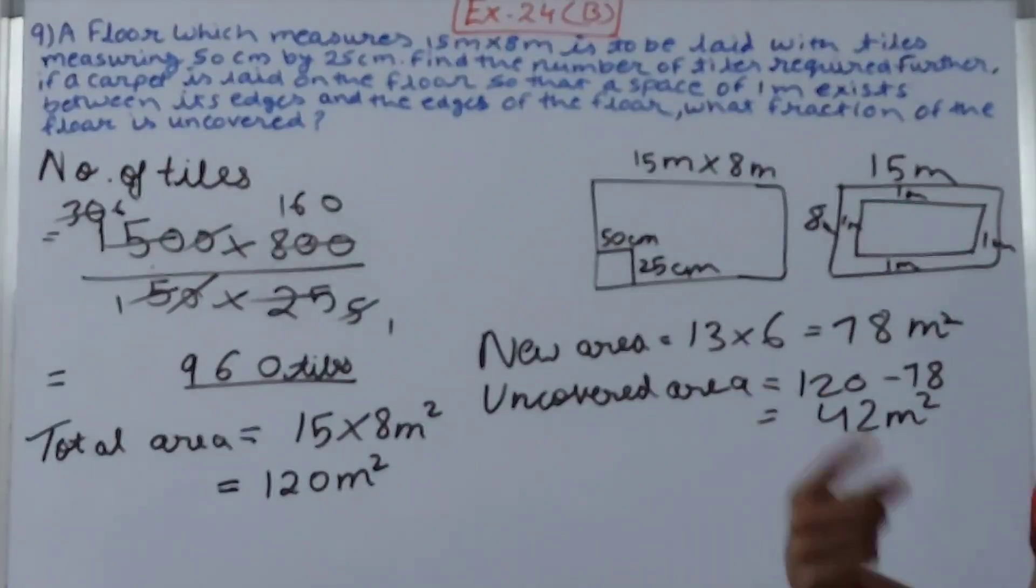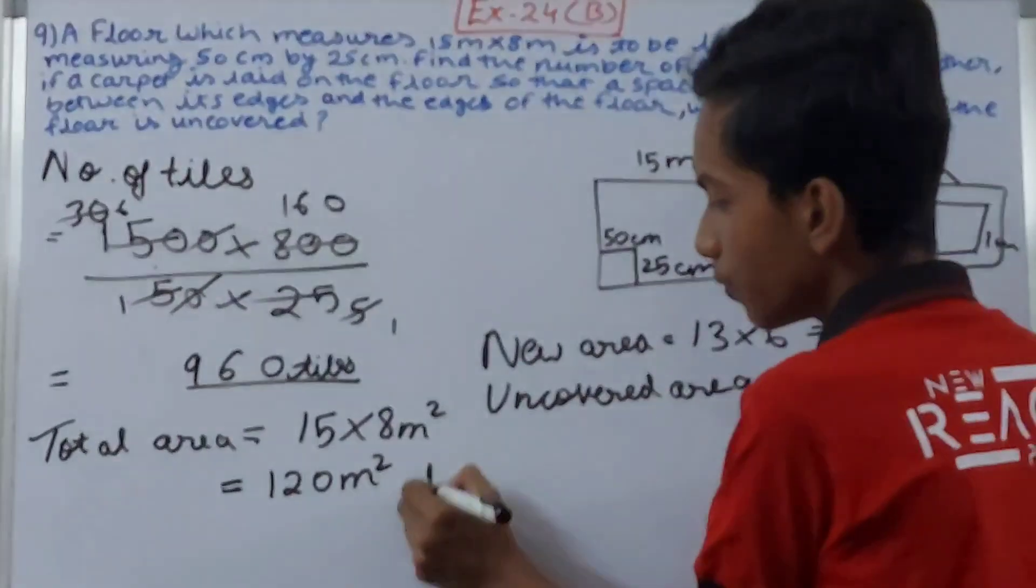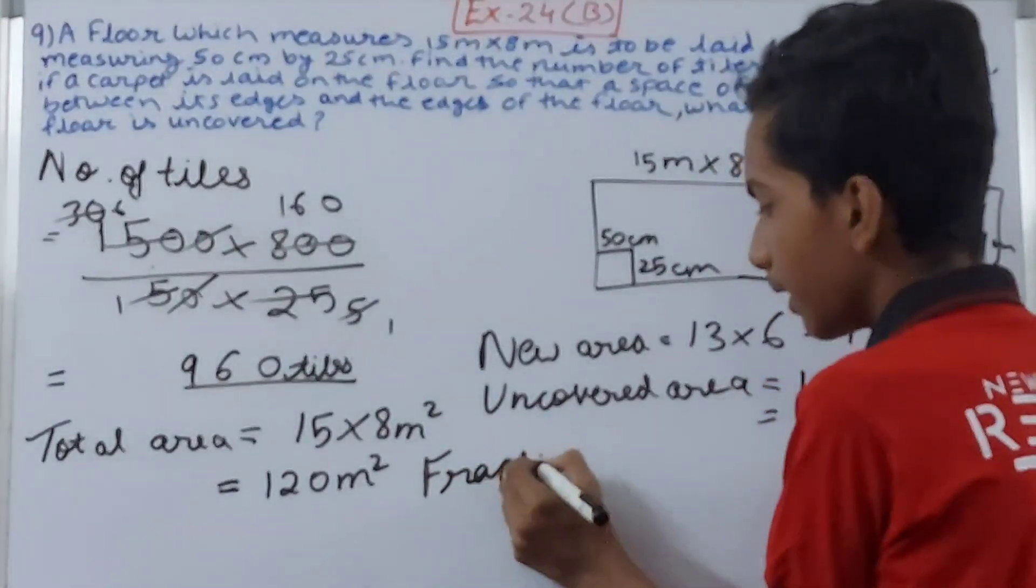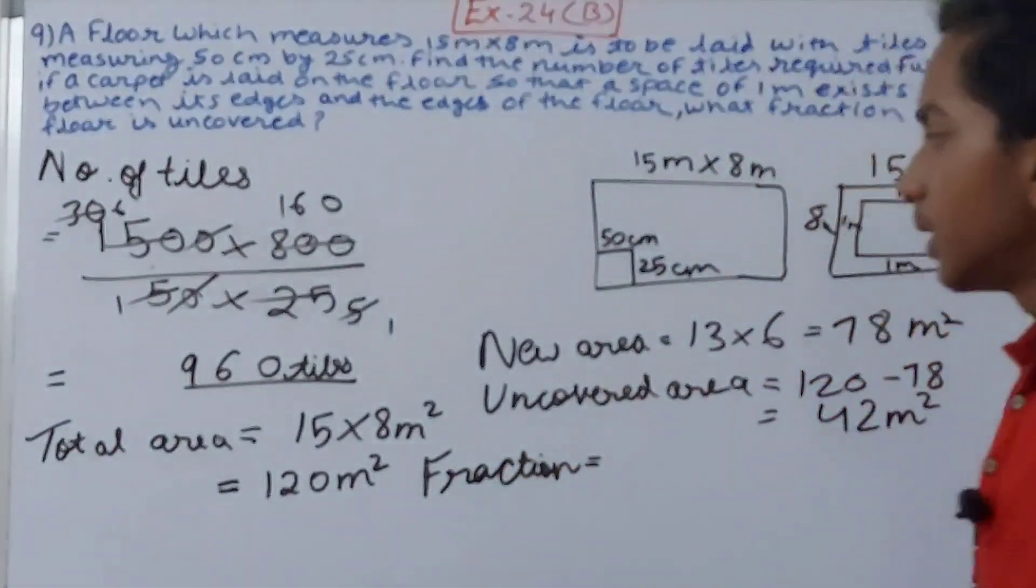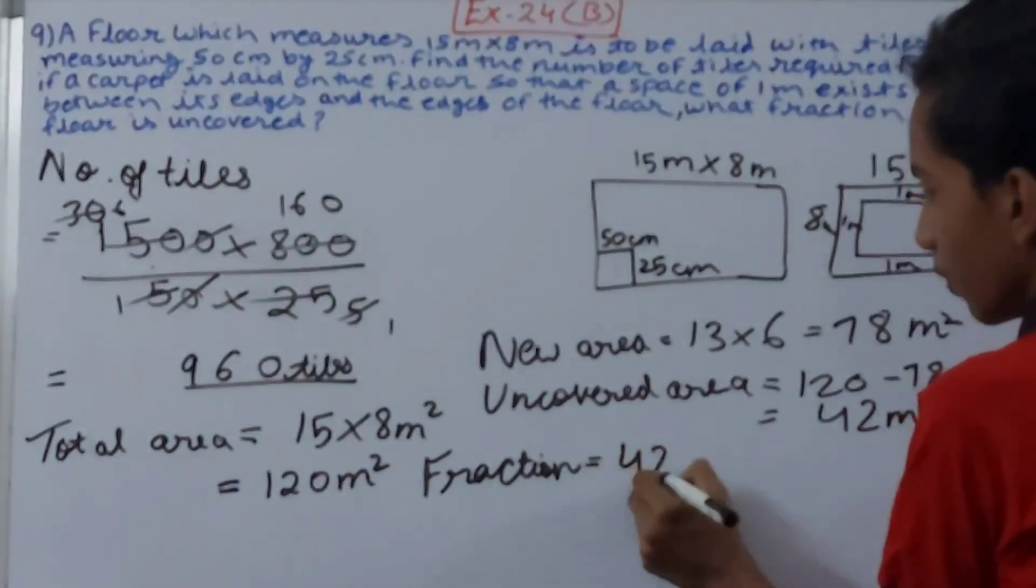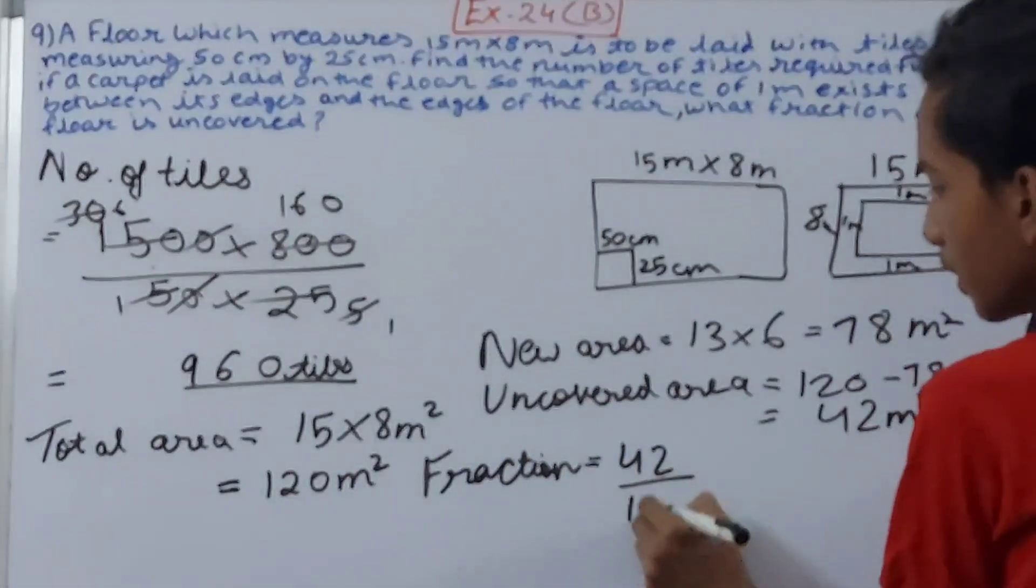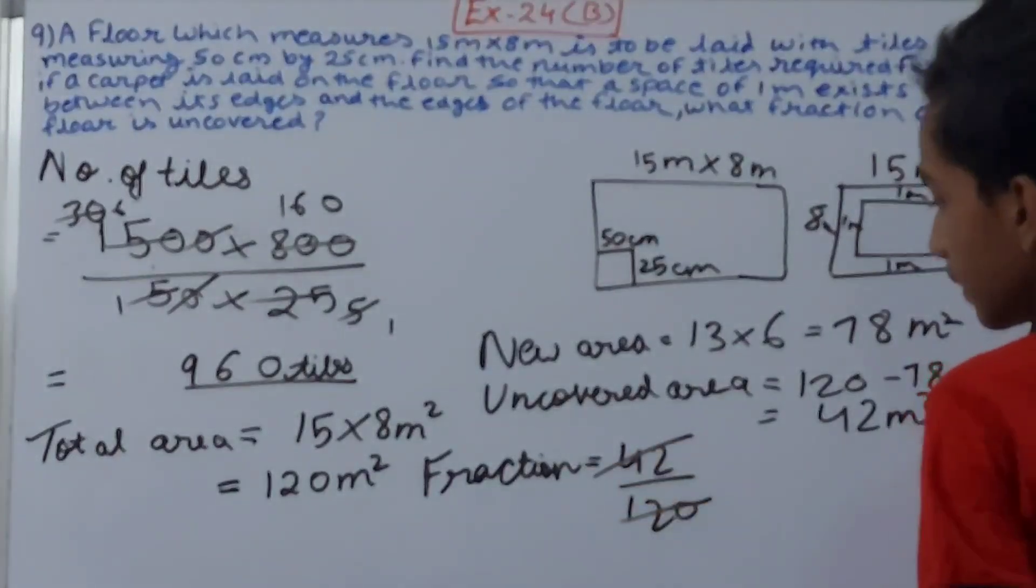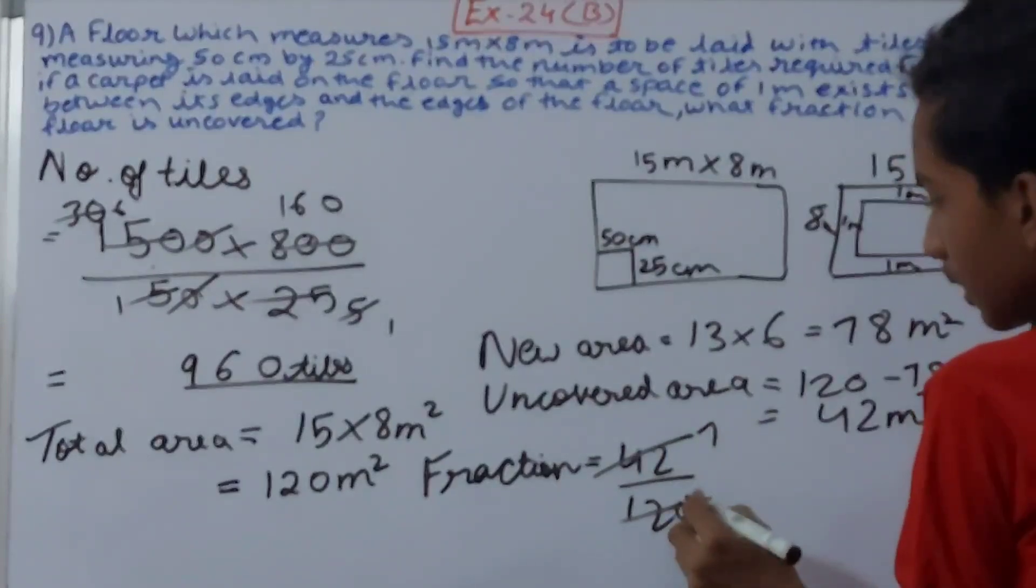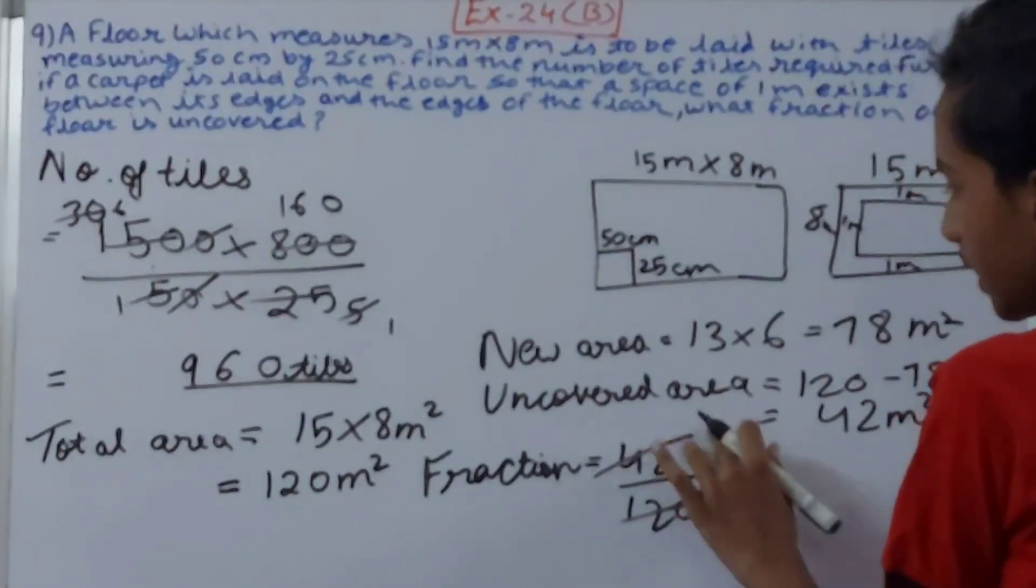So for calculating fraction, what will we do? Simply write uncovered area upon the total area. Keep this in mind. So uncovered area is 42 upon total area is 120. Cancel this, let's cancel this. So this will be 7, sorry this is not, go by that.